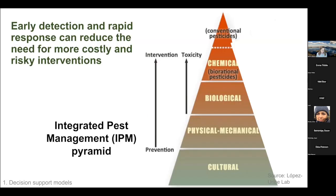Early detection and rapid response to invasive species can reduce the need for more costly and riskier interventions. If we think about the integrated pest management pyramid, we want to stay towards the base of that pyramid if at all possible — cultural controls, physical and mechanical methods. For an invasive species, prevention is critical because the more that species spreads, the more interventions needed, potentially including chemical treatments of increasing toxicity.